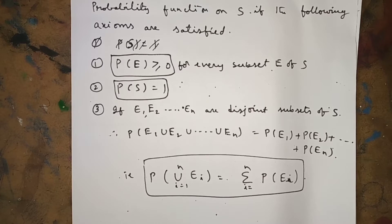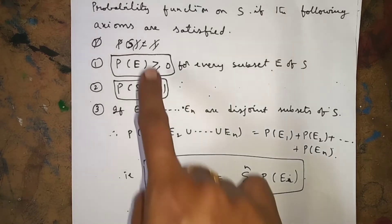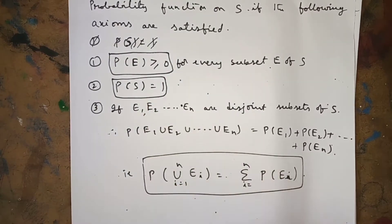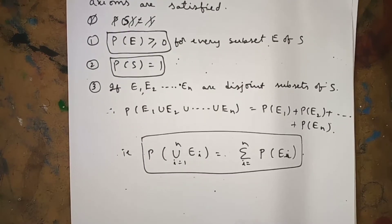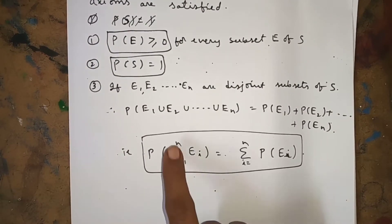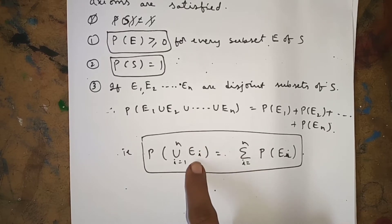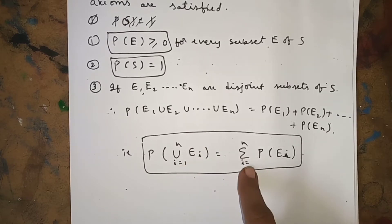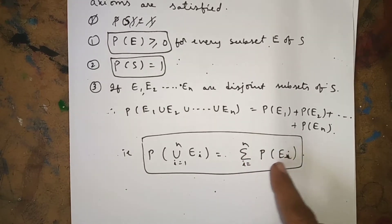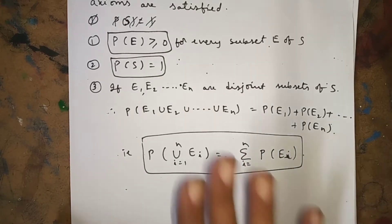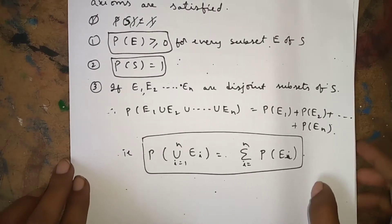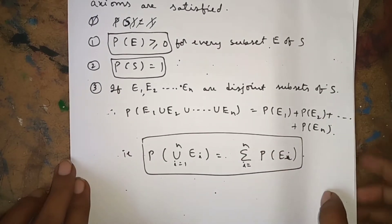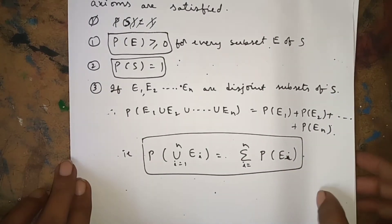The first axiom is non-negativity, P(E) ≥ 0. The second is the axiom of certainty, P(S) = 1 — the sure event. The third is the addition rule for mutually exclusive events. We are going to use this third axiom in Bayes' Theorem to prove it.